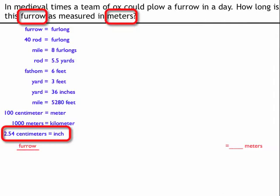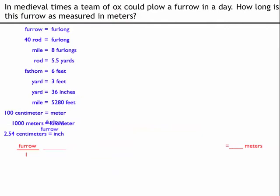So I've got furrows. Now what I'm going to do is write this as a fraction by putting it over the top of 1. And I'll start my process by looking at my list and looking for something else with a furrow in it. So I see a furrow is equal to a furlong. So what I'm going to do is make my next fraction. And I'll write it so furrow equals a furlong with furrow on the bottom. So furrow cancels out the numerator and the denominator.